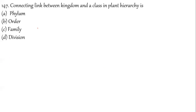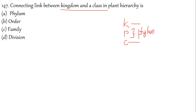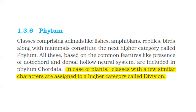Question 147: Kingdom and class — studying the taxonomic hierarchy. In plant hierarchy, the equivalent of phylum is division. NCERT line: in case of plants, classes with similar characters are assigned to division, which is similar to phylum in animals.